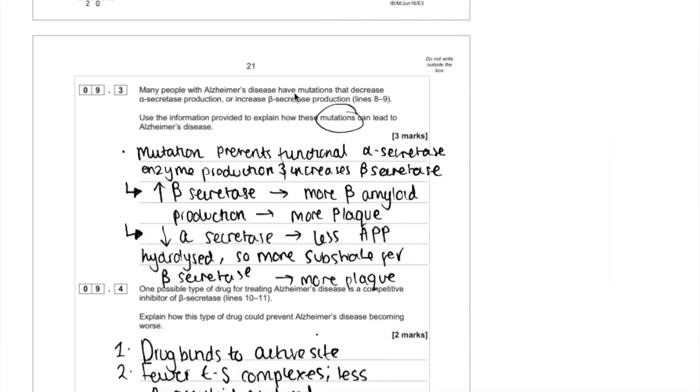The next part: many people with Alzheimer's disease have mutations that decrease alpha secretase or increase beta secretase production. Use the info to explain how these mutations can lead to Alzheimer's disease. I firstly talked about generally what mutations do. In this case, they would prevent a functional alpha secretase enzyme or increase beta secretase production.